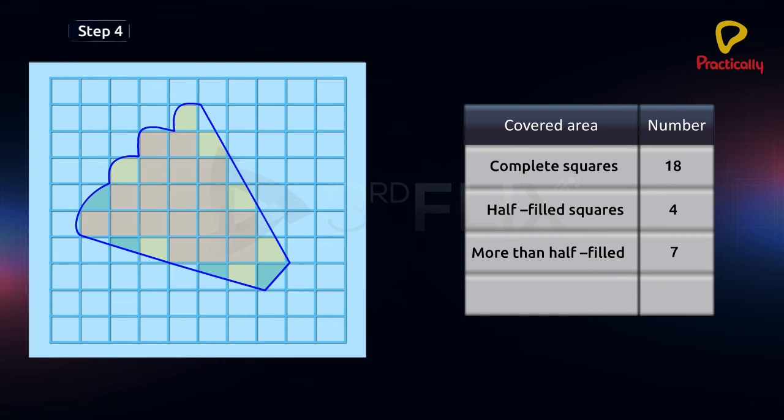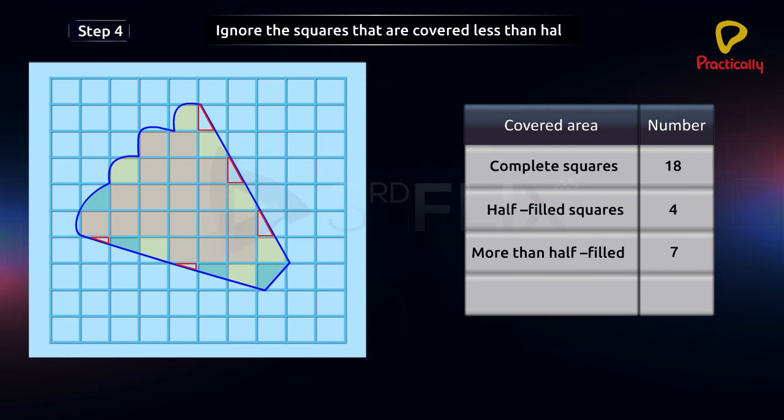Step 4: Ignore the squares that are covered less than half.